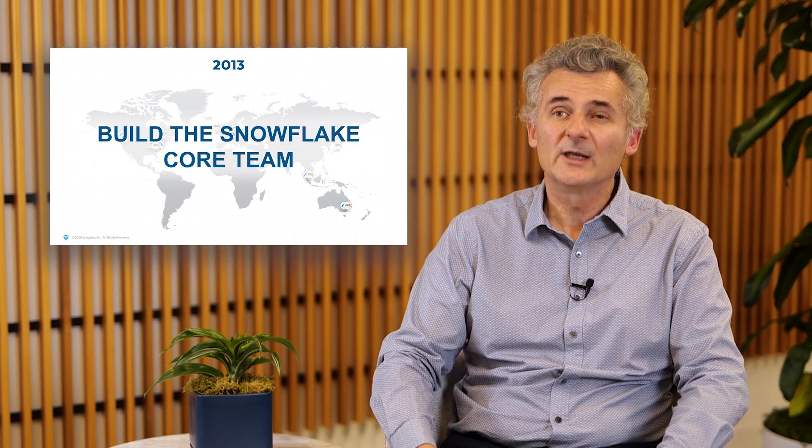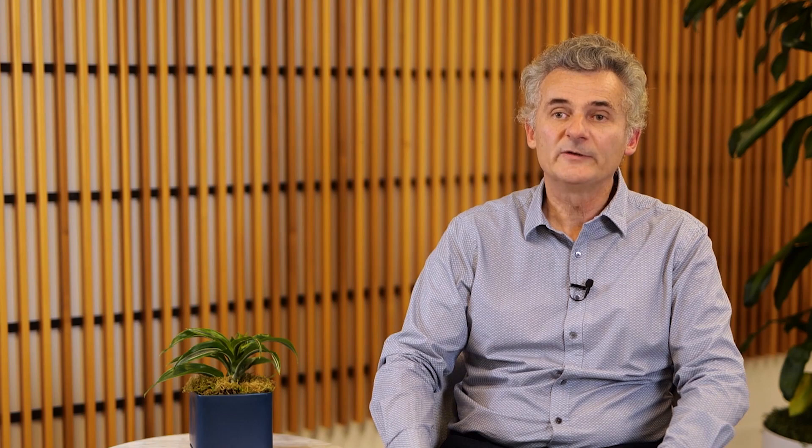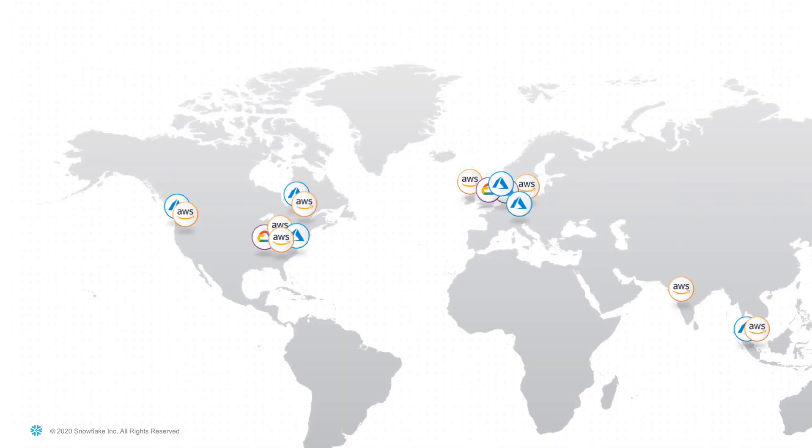2013 was about building the Snowflake team and all of us working non-stop to implement the Snowflake platform blueprint. By 2014, we already had the beta version of Snowflake, used by some early and really brave adopters. But before going GA, we wanted to harden the platform and continue to invest in building more enterprise-grade features.